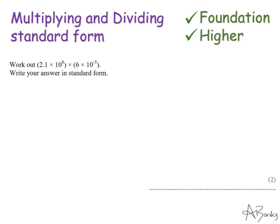The first thing I'm going to do is look at the numbers that I've been given. I've got a 2.1 and a 6. I'm going to rewrite these out but I'm going to write them next to each other with my multiply in the middle.